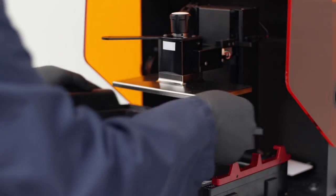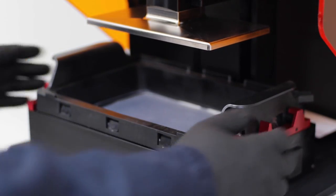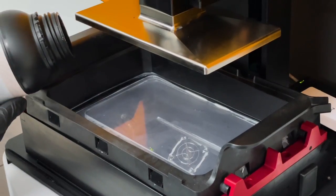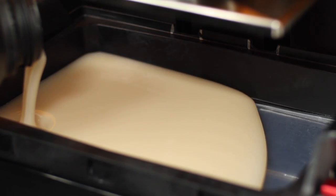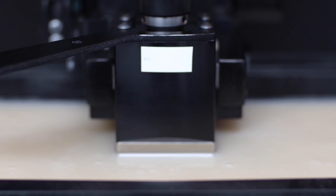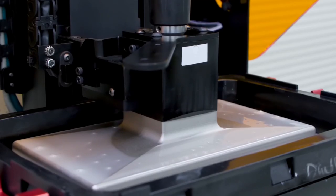First, for printing we set up typically for an immediate denture with supports on the intaglio surface, the fitting surface of the denture. Typically it depends, we either print horizontal or at a 45 degree angle with the denture if it's going to be an immediate denture.